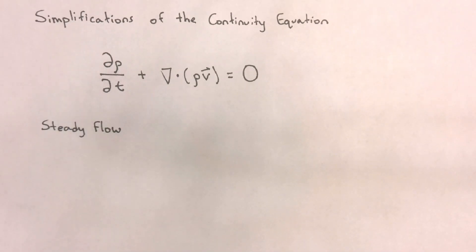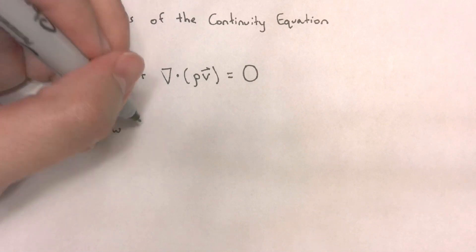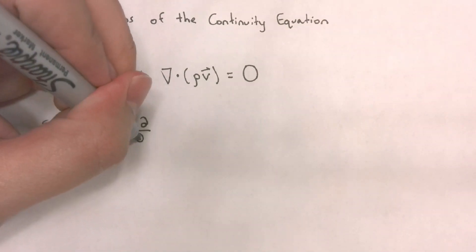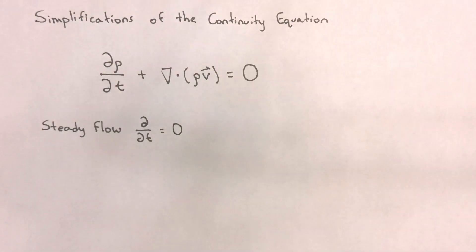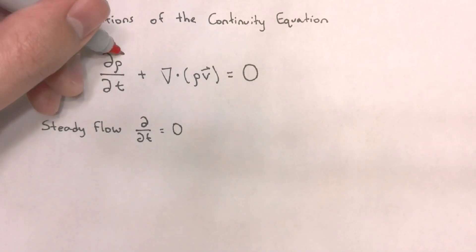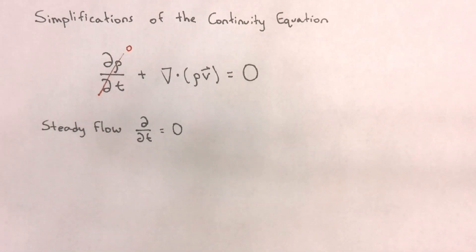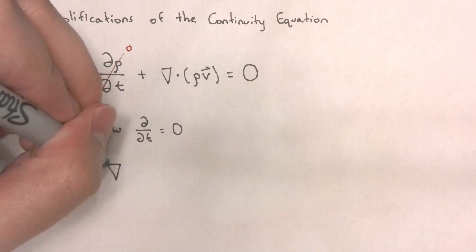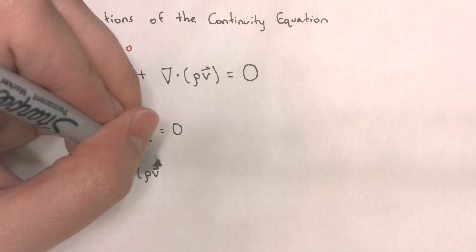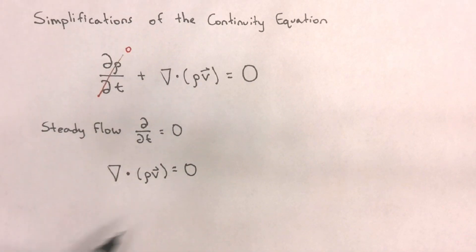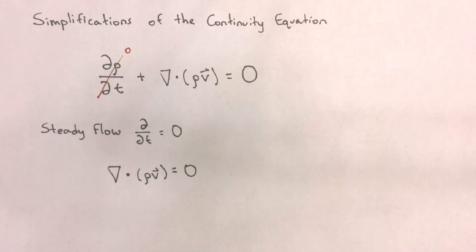Steady flow is an assumption that requires that no fluid properties change with respect to time. That means that the derivative of any fluid property with respect to time should be equal to zero. Looking at our continuity equation, this tells us that the derivative of density with respect to time is zero. That means we can simplify our continuity equation as follows. We will have that the divergence of the density times the velocity field is equal to zero.